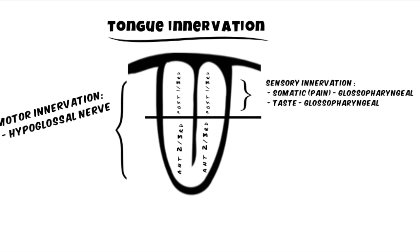The sensory part of the posterior one-third is innervated by cranial nerve 9, which is the glossopharyngeal nerve.